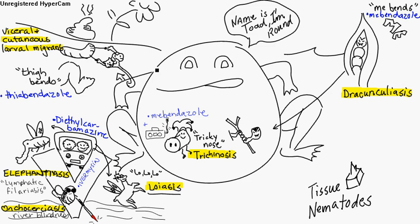Then you get the trichinosis — the tricky nose. It's a tricky pig nose. It comes from undercooked pork. It's caused by Trichinella spiralis.